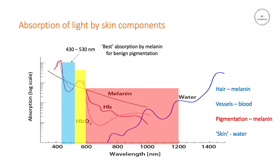And if you want to treat benign pigmentation and you're trying to target the melanin, then you could use a lower filter, somewhere between 430 and 530 nanometers. Down that end of the spectrum you'll get preferential absorption of melanin. It does conflict a little bit with blood, but you will get a fairly strong absorption. I should point out that the absorption scale on the y-axis is a logarithmic scale — so this is not linear, which makes a big, big difference.